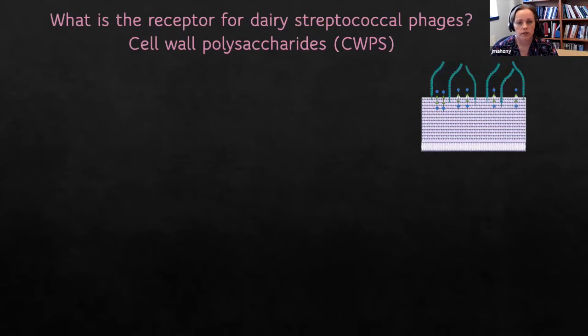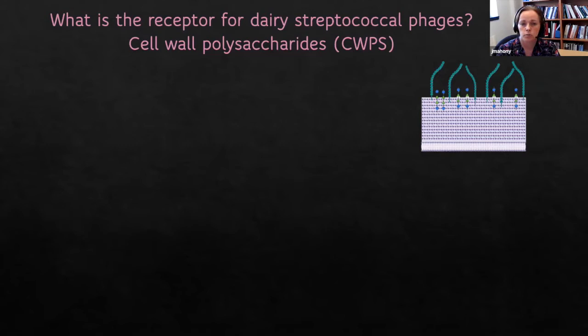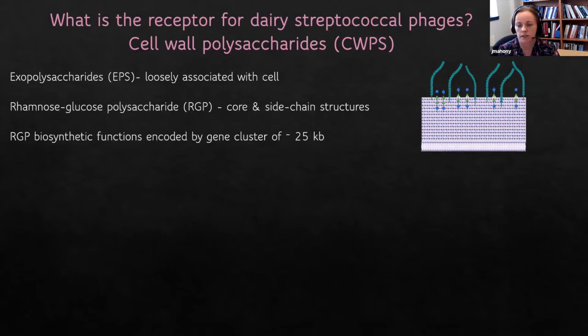So what's the receptor for dairy streptococcal phage? In our group, and in Danish research groups, we now know that it involves cell wall polysaccharide components. This may be represented by exopolysaccharides or EPS for some phage groups, with loose associations with the cell surface. Then there are the rhamnose glucose polysaccharides, which are embedded and exposed on the cell surface but not to the same extent as EPS.